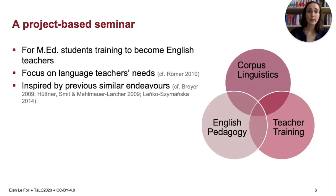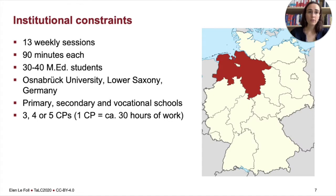This was a project-based seminar designed for master students training to become English teachers, which really focuses on language teachers' needs. The institutional constraints were the following: I had 13 weekly sessions — that's one semester at a German university — and each session lasts 90 minutes. Usually there are something between 30 to 40 students, and this was happening at Osnabrück, which is in Lower Saxony. The students are training to become English teachers for primary, secondary and vocational schools.